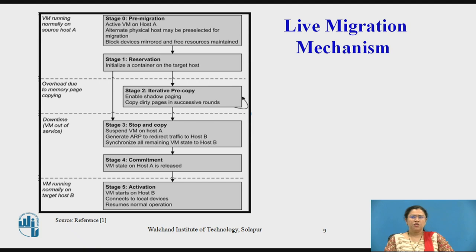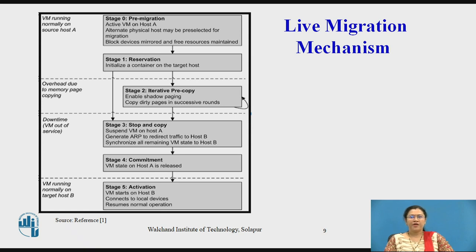Then in Stage 3, the stop-and-copy stage, the running operating system instance at host A is suspended and host A's network traffic is redirected to host B. The CPU state and any remaining inconsistent memory pages are transferred. At the end of this stage, there is a consistent suspended copy of the virtual machine at both host A and host B. The copy at A is considered primary and will be resumed in case of any failure.